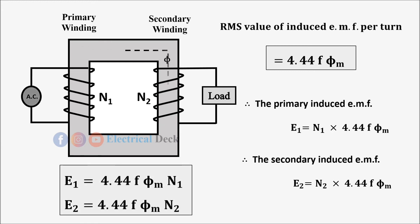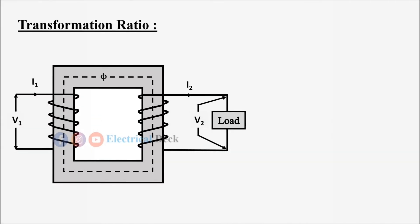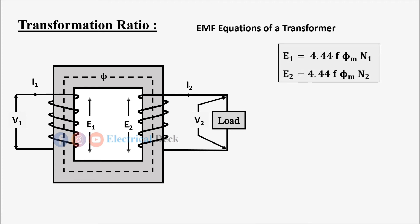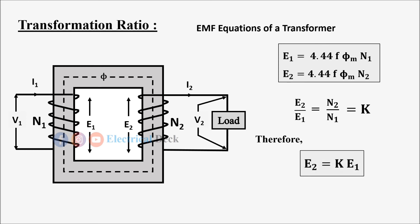Let us now find the voltage transformation ratio of a transformer. By taking the ratio of E2 to E1, we get the voltage transformation ratio: E2/E1 = N2/N1, which is denoted by K. Therefore E2 = K·E1, where K = N2/N1.